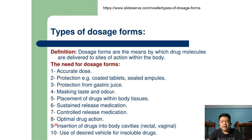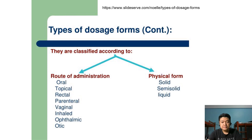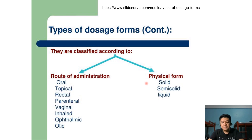Dosage forms are also important to achieve optimal drug action, for insertion of drugs into body cavities such as those given rectally and vaginally, and as a desired vehicle for insoluble drugs. Dosage forms can be classified by route of administration — oral, topical, rectal, parenteral, vaginal, inhaled, ophthalmic, and otic — or by physical form: solid (e.g., tablets, capsules), semi-solid, and liquid.